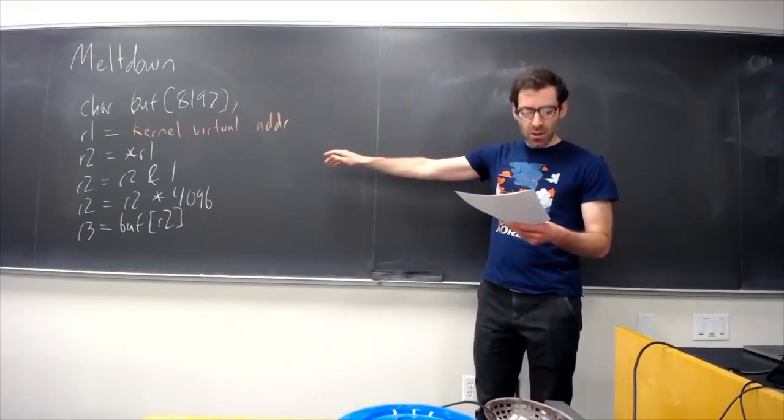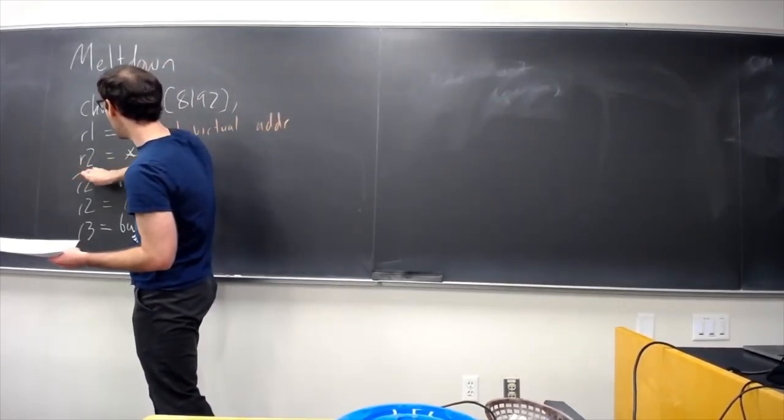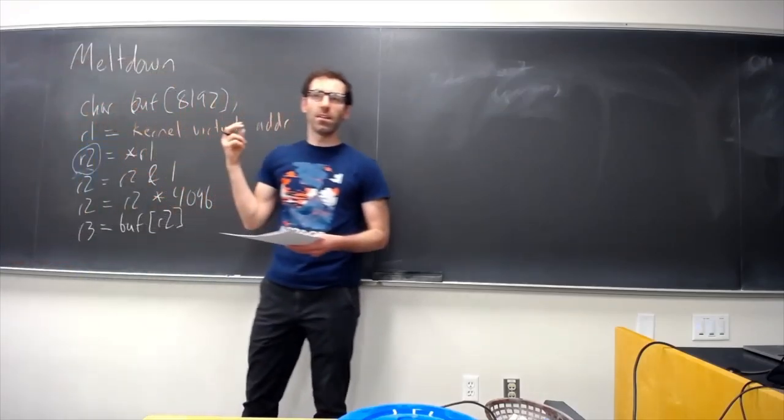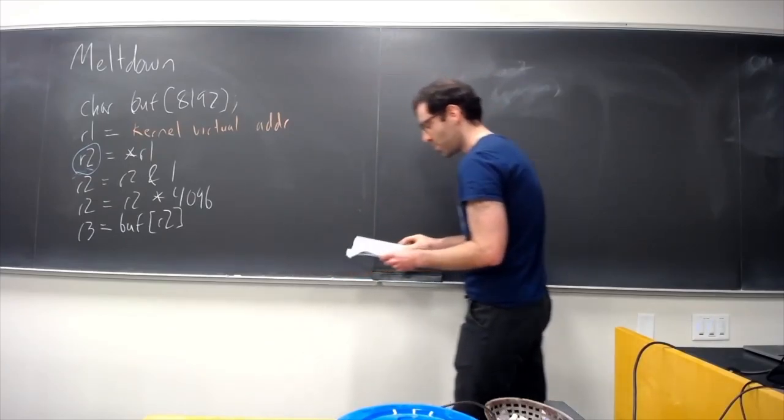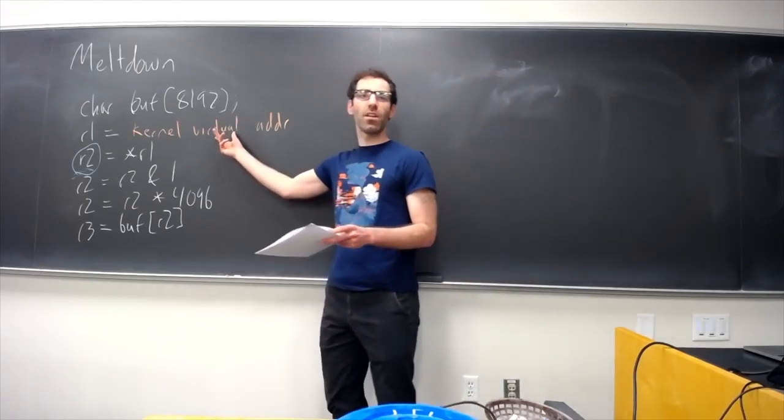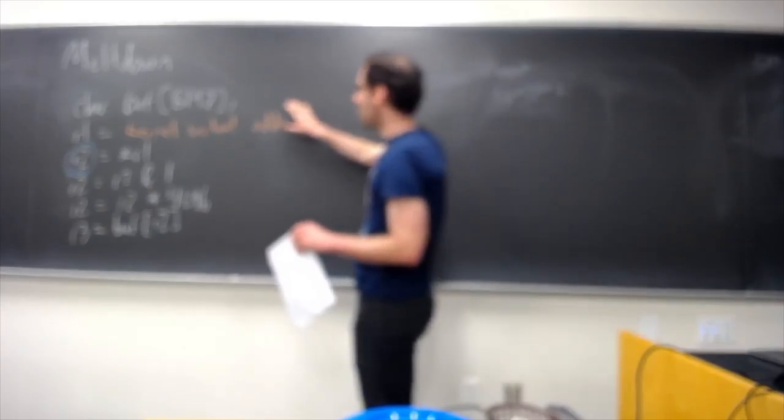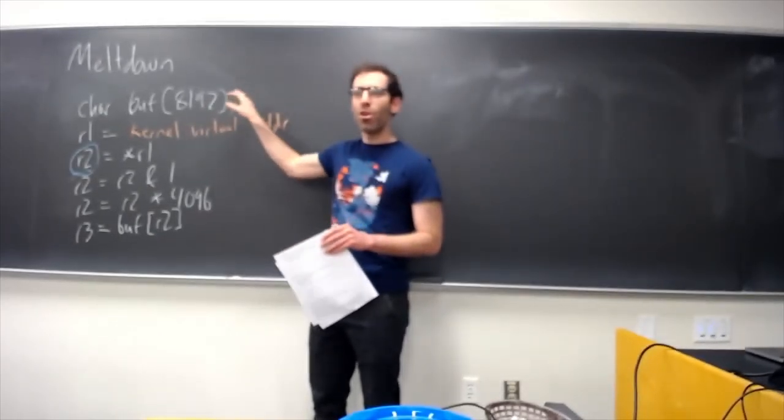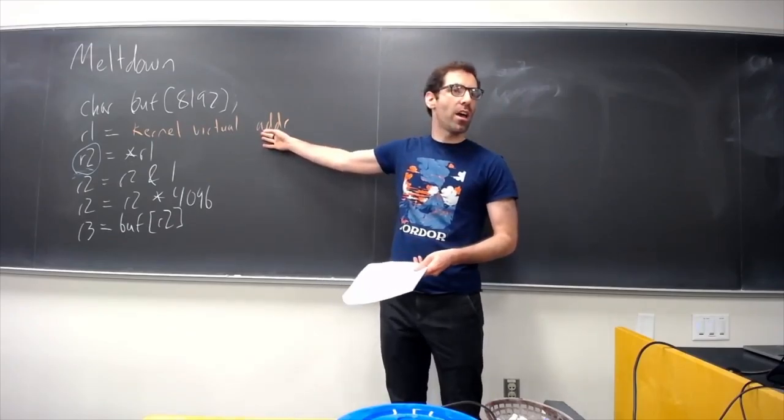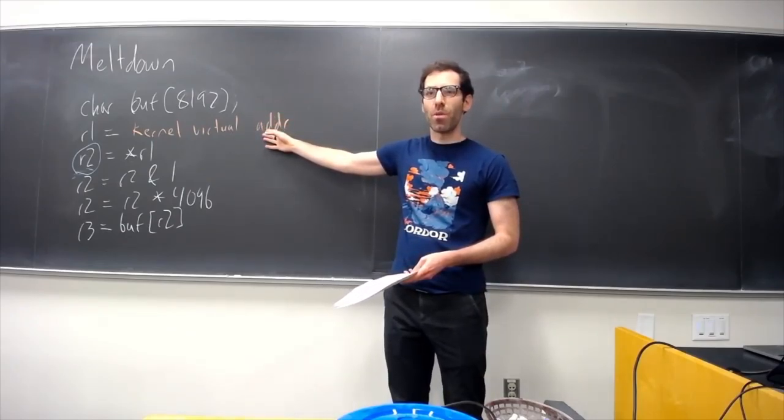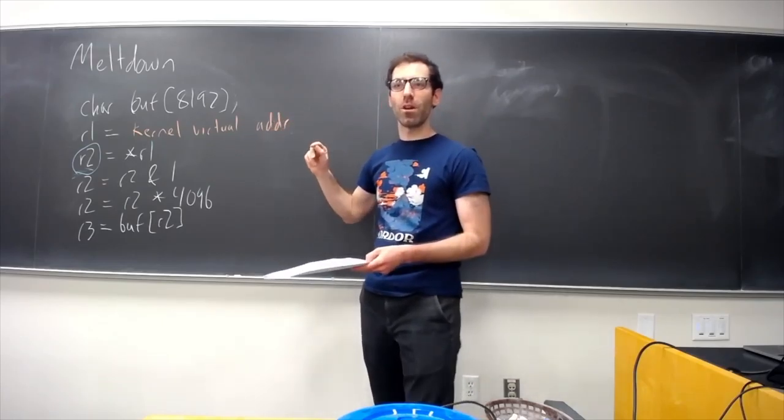So, this will be executed as user code. And the key question is, will R2 end up holding data from the kernel's memory? This also depends on having a kernel virtual address in this case. And maybe we just can make a good guess, or we know like where the kernel has some data or some secret, like a password or whatever it is that we're interested in. Maybe we're just trying many, many possible addresses. Maybe we've carefully studied the implementation of the kernel we're attacking to get a better idea of where in virtual memory we might want to attack.